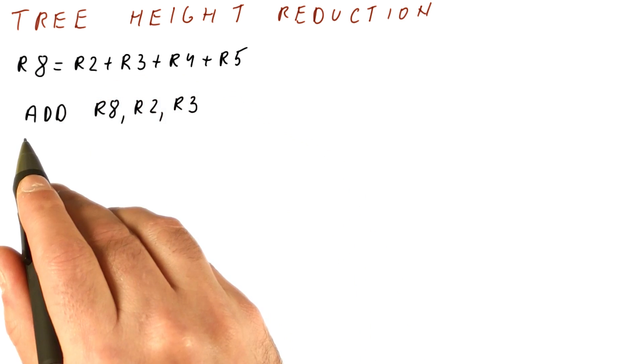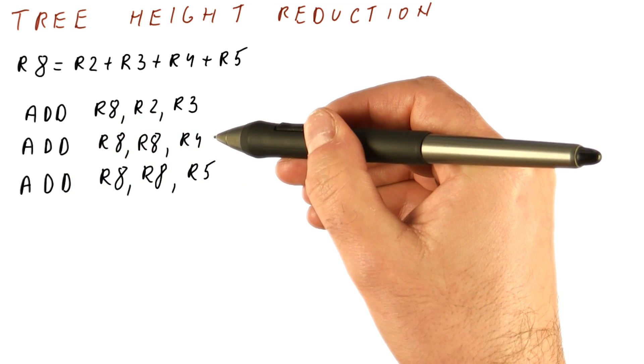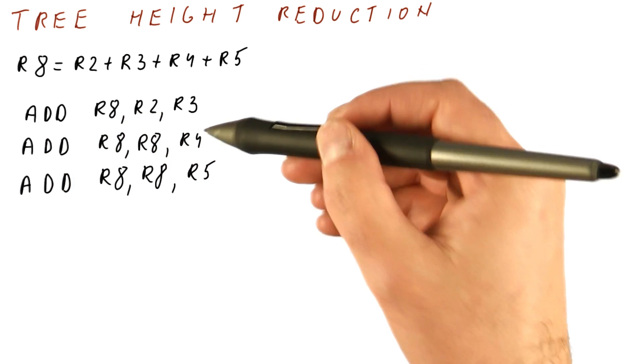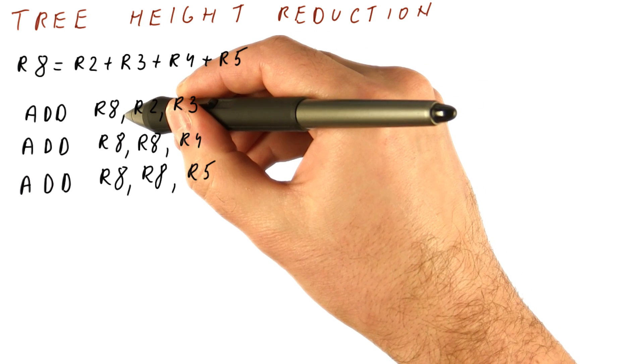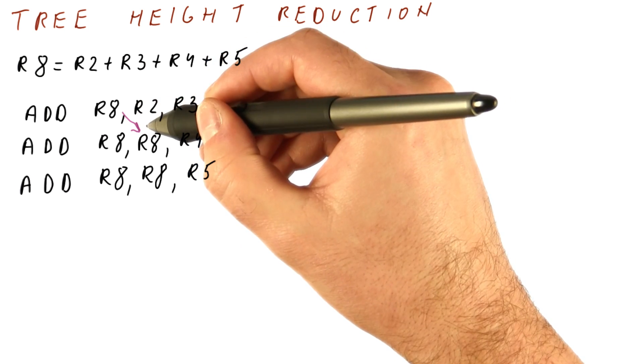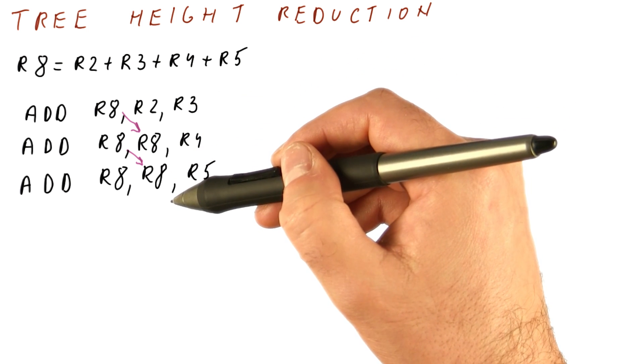One way to get that is to add the first two numbers into R8, and then add the second number, and then add the third number, and then the fourth number. However, this forms a dependence chain because we have the dependence here and the dependence here, so really these instructions have to be done one after the other.